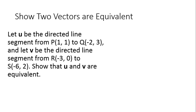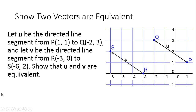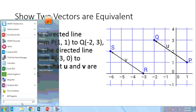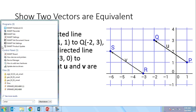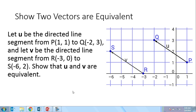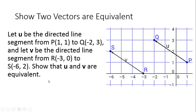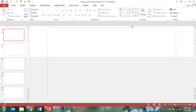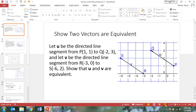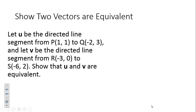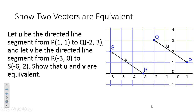We want to show that two vectors are equivalent. In order to show that two line segments are equivalent, we need to first show that they have the same magnitude, and then show that they have the same direction. Two parts to a vector: magnitude and direction.